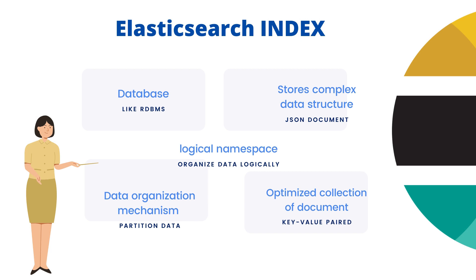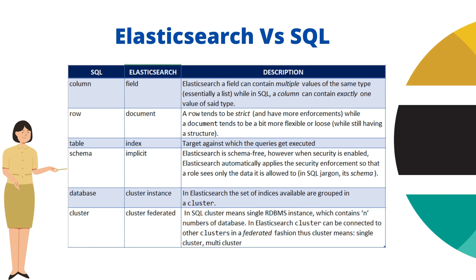Let's compare SQL and Elasticsearch for better understanding. In the table here, I am comparing some SQL terms and Elasticsearch terms. What we call a column in SQL, in Elasticsearch we call it a field. And rows in SQL, we call them documents in Elasticsearch. One row means one document.